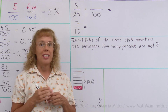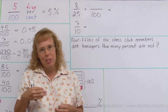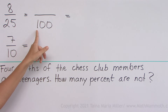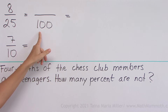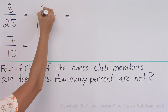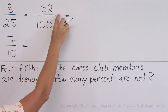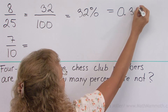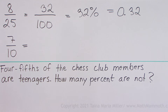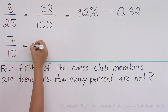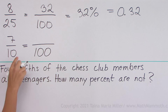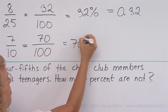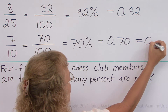Next, we have some fractions that we can easily convert into percentages. 8 over 25: I can use equivalent fractions and write this with the denominator 100. 25 goes 4 times into 100, so 8 times 4 equals 32 — that's 32 per cent, or 32%. As a decimal: 0.32. 7 tenths: again, think through equivalent fractions, put 100 as the denominator — 10 times 10, 7 times 10 — so we get 70 hundredths, 70%, or 0.70, which is also 0.7. So all of these five are equal.